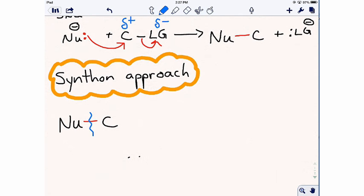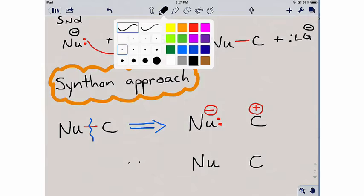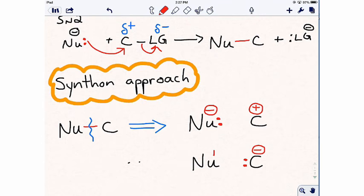Imagine disconnecting the nucleophile carbon bond in reverse. There are two different places where those red electrons could have come from. They might have originally come from the nucleophile, making the nucleophile negative and the carbon positive. Or it could have been the opposite. The carbon might have started with the electrons and the positive charge with the nucleophile.